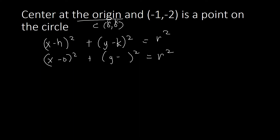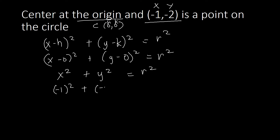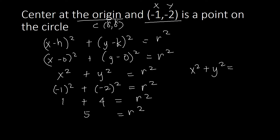This simplifies to x squared plus y squared equals r squared. We don't have r squared yet, so we plug in the given point (-1, -2). We get (-1) squared plus (-2) squared equals r squared. Negative 1 times negative 1 is positive 1, and negative 2 times negative 2 is positive 4, so 1 plus 4 equals 5. Therefore r squared equals 5, and our standard equation is x squared plus y squared equals 5.